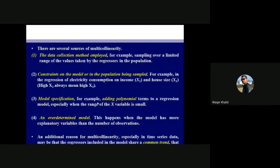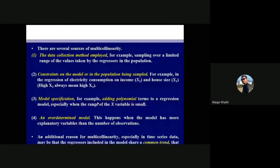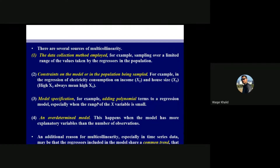What are the sources of multicollinearity? From where does the problem of multicollinearity arise in our data? When you are testing your data and your software gives you an answer that your data possesses multicollinearity, what are the reasons? There are four or five main important points to keep in mind.